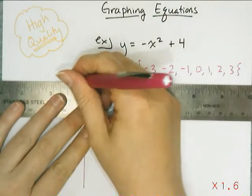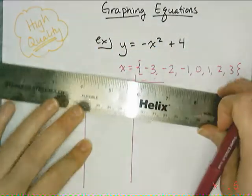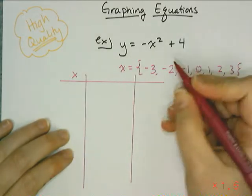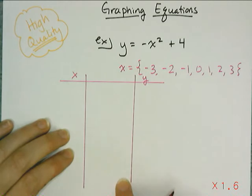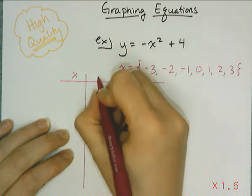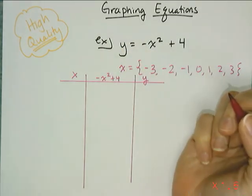Now, you don't have to use a ruler to make your table. I just had it handy, so I'm just going to use it. This is going to be the column for my x values. This is going to be the column for my y values. And in the middle goes my work, which is basically this equation: negative x squared plus 4 is the expression I have to use.